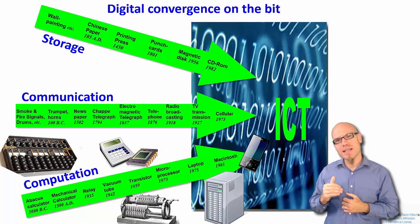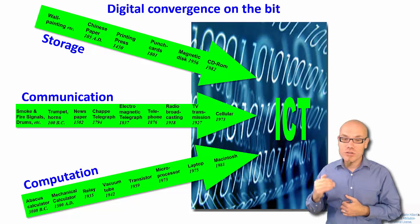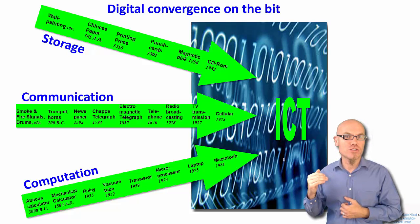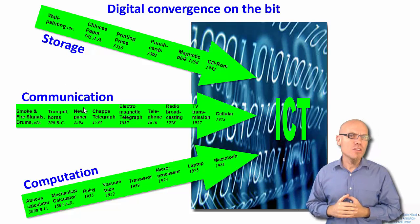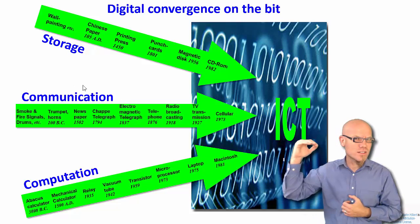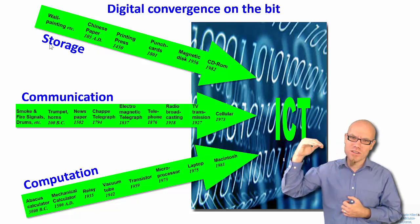So these are basically the three things that you can do with information. You can transmit information through space - we call this communication. You can transmit information through time, from now to later usage - we call this storage.